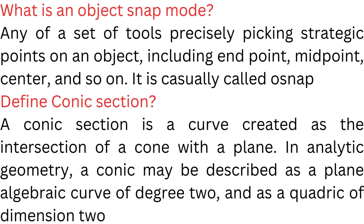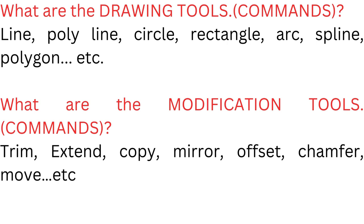Define Conic Section. A conic section is a curve created as the intersection of a cone with a plane. In analytic geometry, a conic may be described as a plane algebraic curve of degree 2 and as a quadratic of dimension 2.